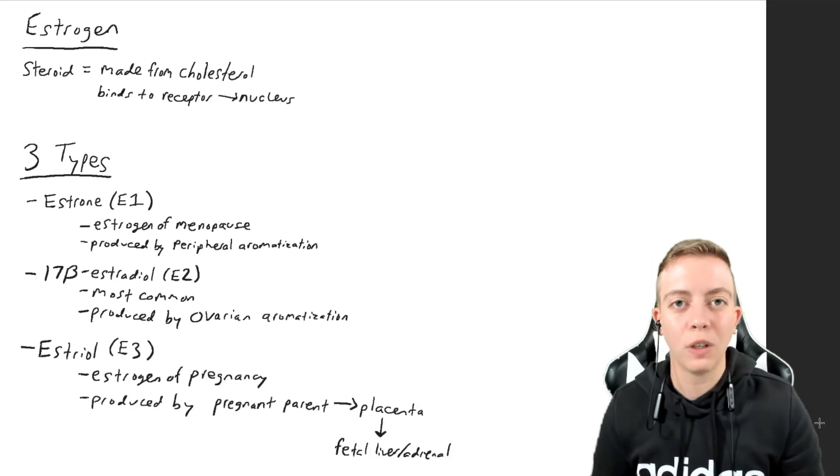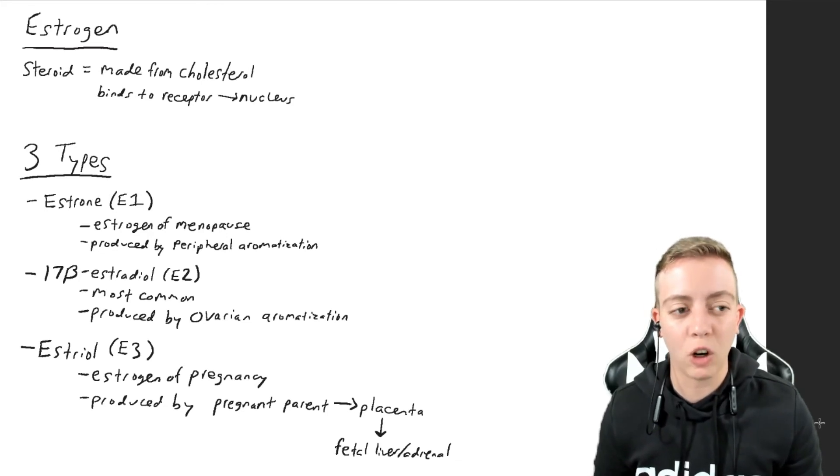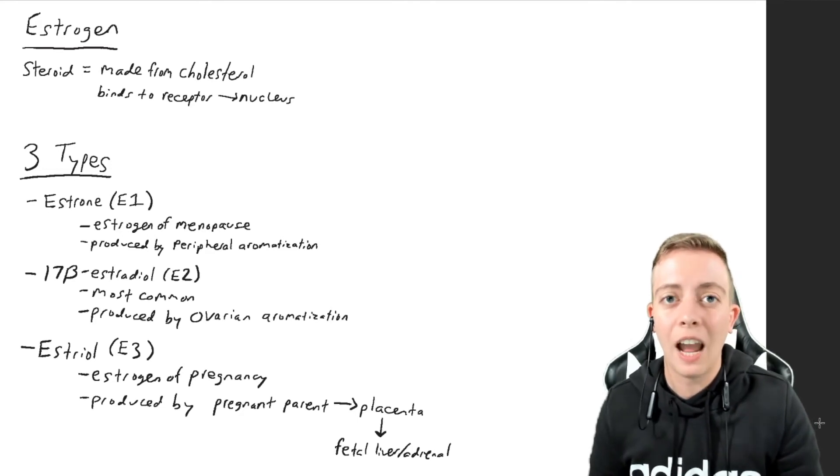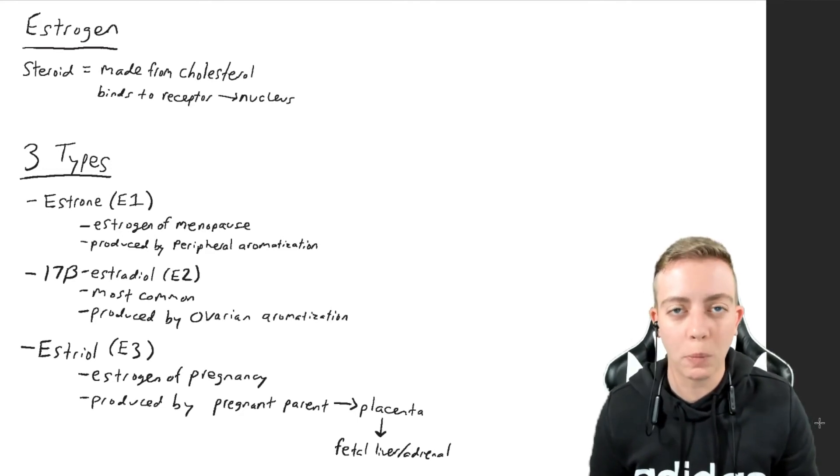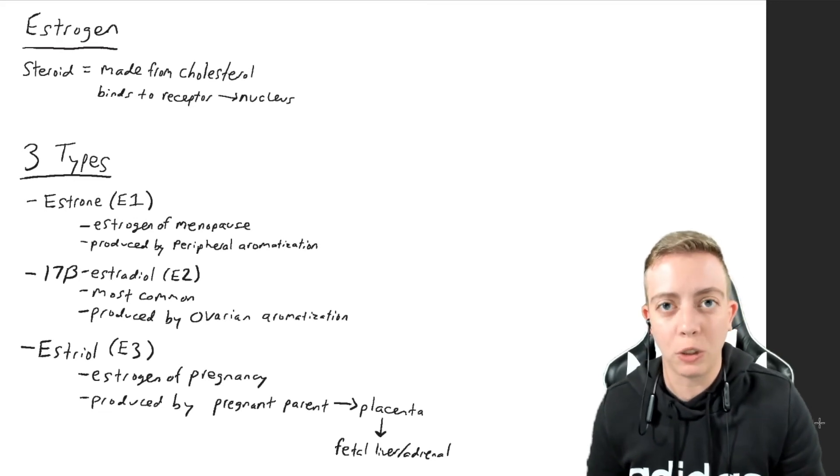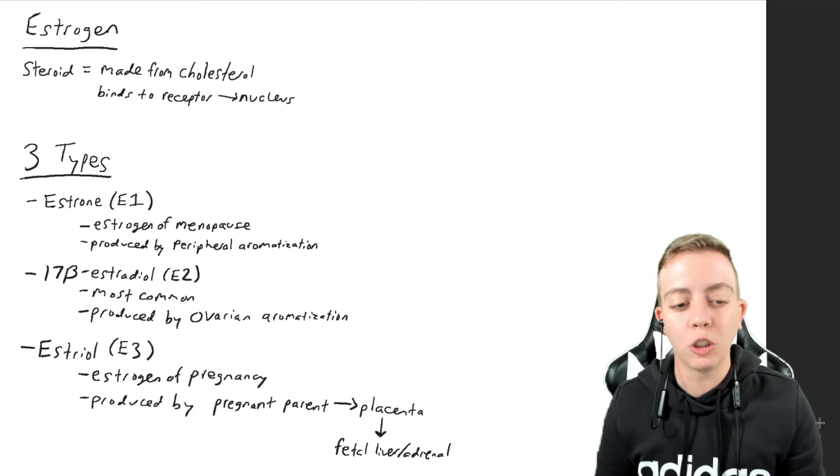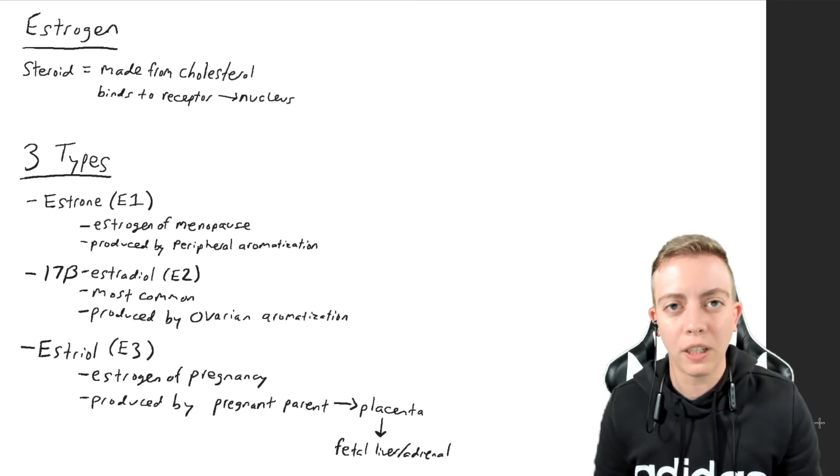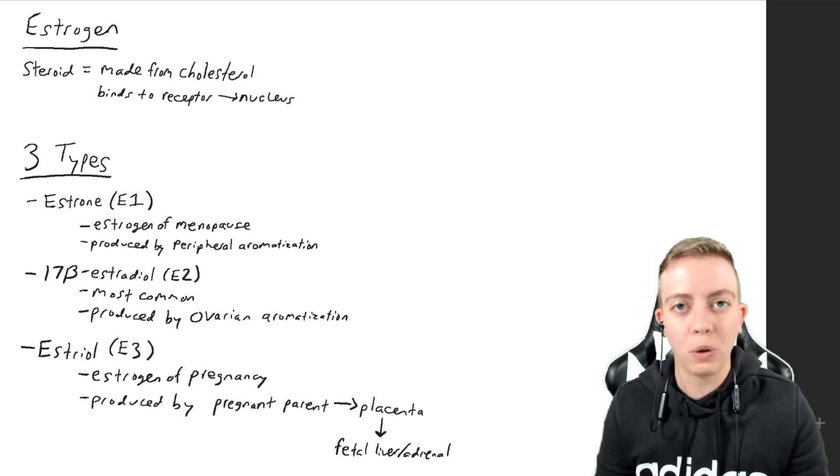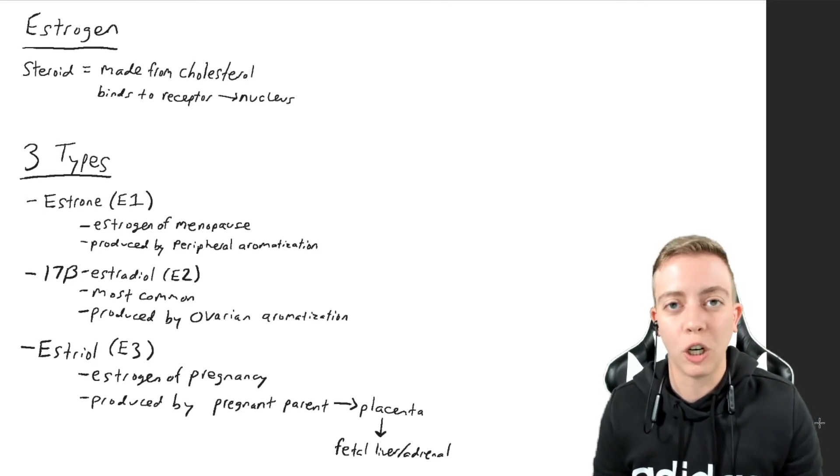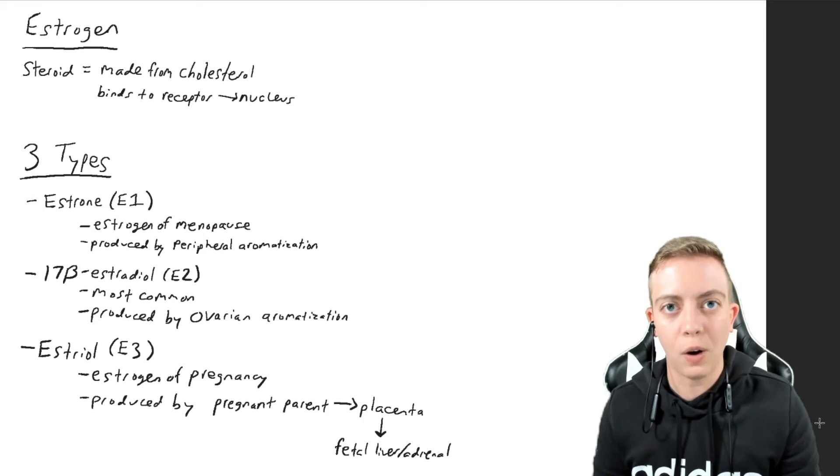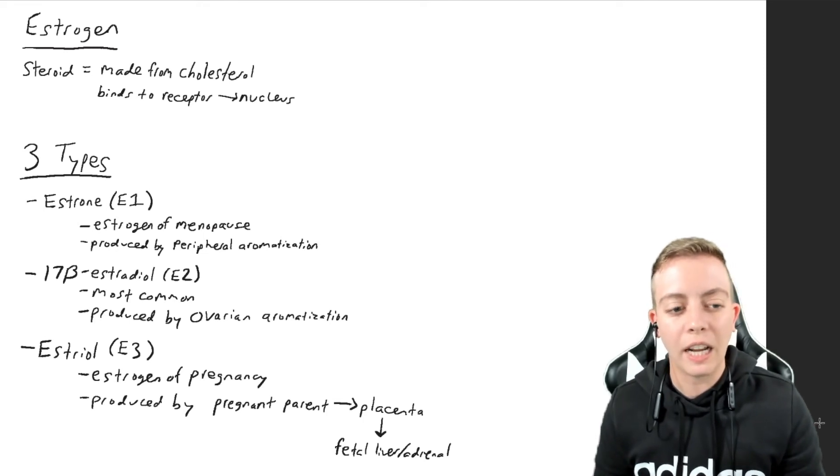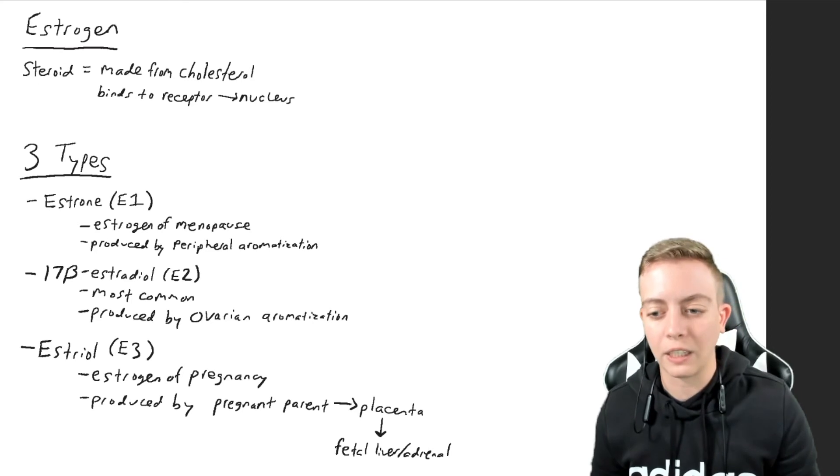Next up, we have E3, which is estriol. Estriol is a less common form and the least potent out of all of them. It is the estrogen of pregnancy, and this is actually a really fascinating hormone. It is produced by an interplay of the pregnant parent, the placenta, and the fetal liver and adrenal gland. There's this wild process of how all of these components affect each other in estriol production, but we're going to go into that later.